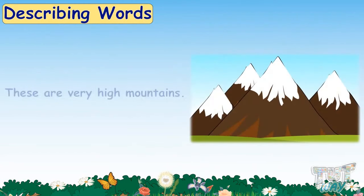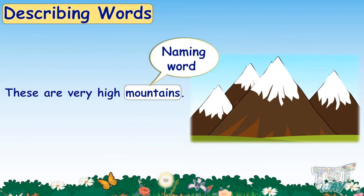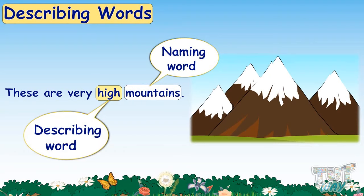These are very high mountains. Here, mountains is the naming word, as they refer to some place. And high is describing the mountains, so it is a describing word for the naming word mountains. The word high is an adjective.